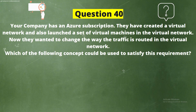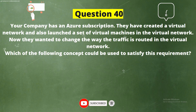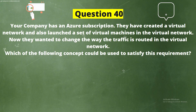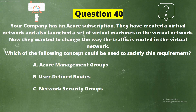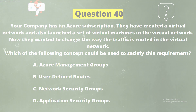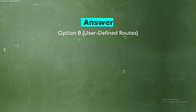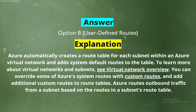Question 40: Your company has an Azure subscription. They have created a virtual network and launched a set of virtual machines in the virtual network. Now they want to change the way traffic is routed in the virtual network. Which of the following could be used? Options: Option A, Azure Management Groups; Option B, User Defined Routes; Option C, Network Security Groups; Option D, Application Security Groups. The correct answer is Option B, User Defined Routes. Explanation: Azure automatically creates a route table for each subnet within an Azure Virtual Network and adds system default routes to the table.